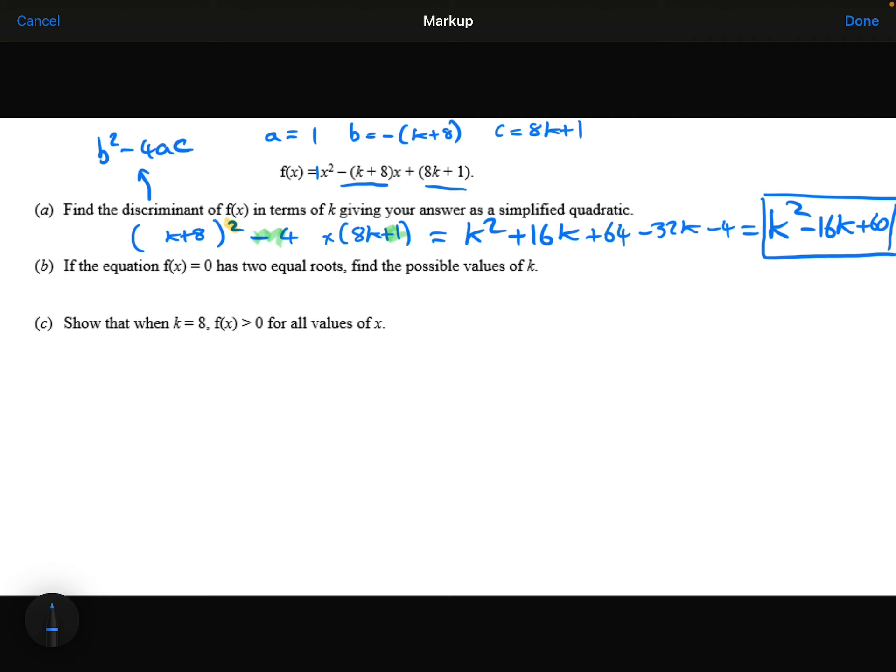Part B: If the equation f(x) equals 0 has two equal roots, find the possible values of k. So two equal roots means that my discriminant, which I've just found, is equal to 0.